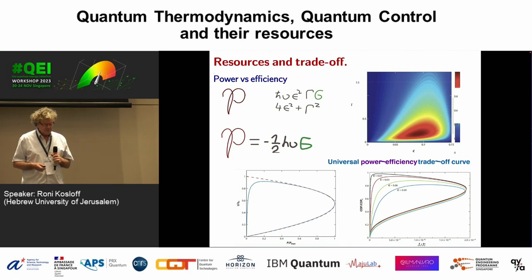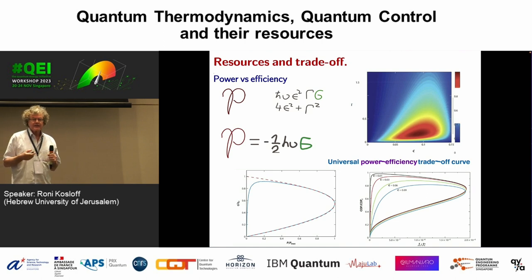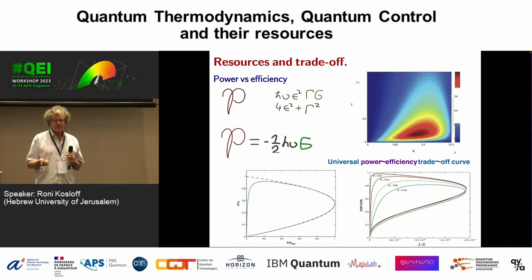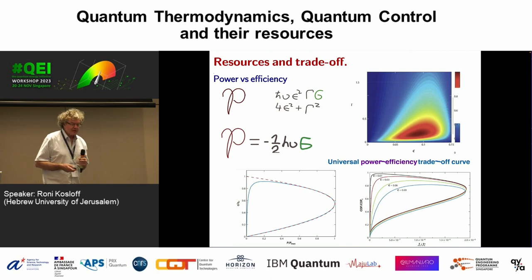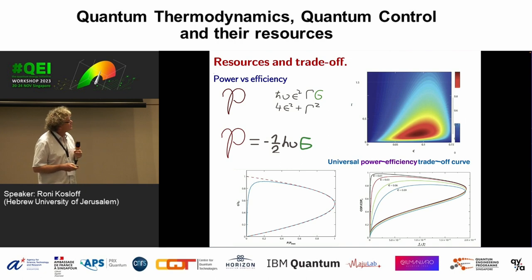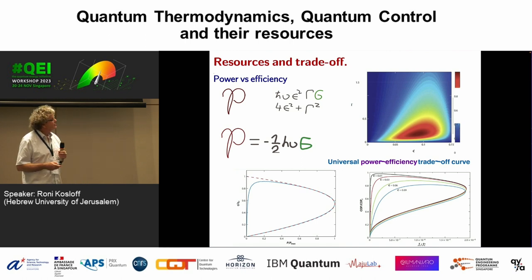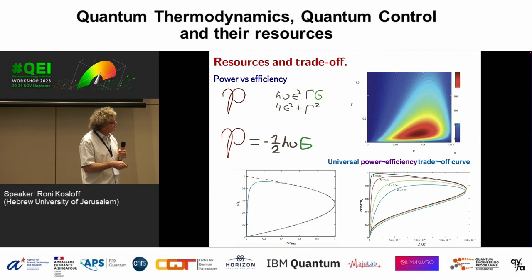Another trade-off we have to think about is power. We don't want to work at zero power — we want an engine to run as fast as possible. There's a well-known trade-off between efficiency and power, starting classically with Novikov, then Curzon and Alboran, and it also works in the quantum regime. Using the same universal device, you get a universal trade-off curve: power divided by maximum power versus efficiency divided by maximum efficiency.